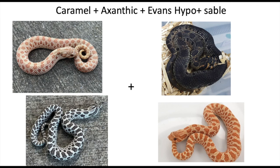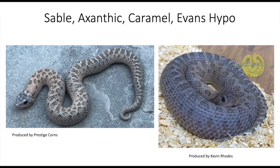Then we have the caramel xanthic Evans hypo plus sable, which produces this crazy-looking snake right here — I also had this in my sable video. Very cool combinations.